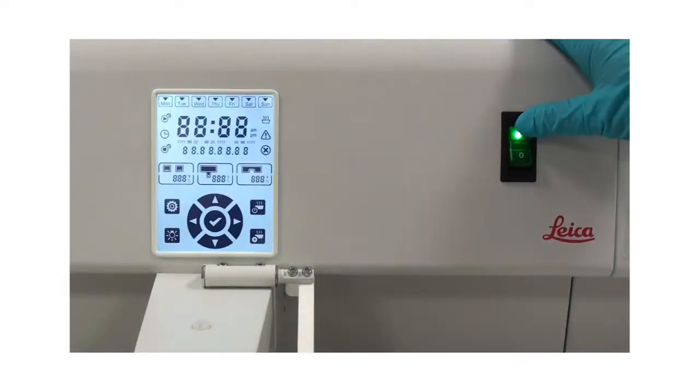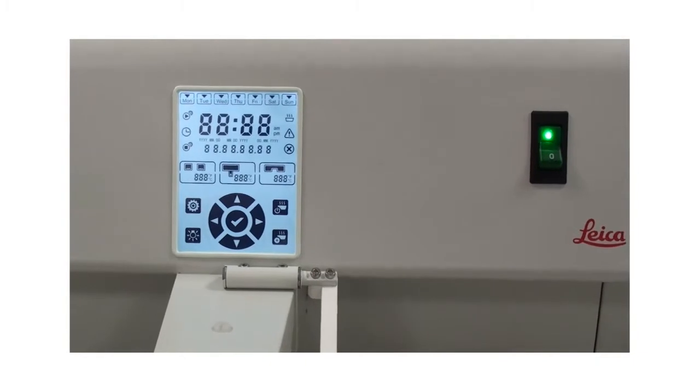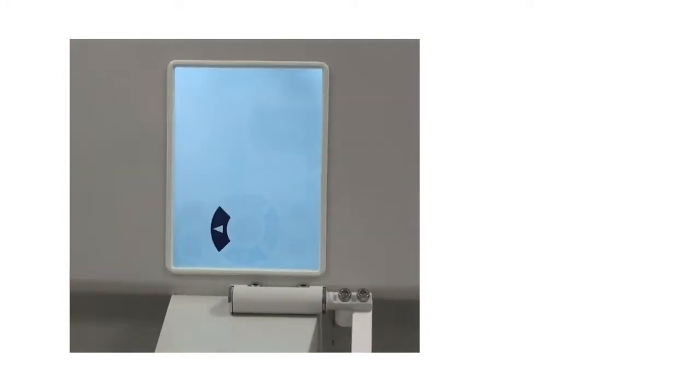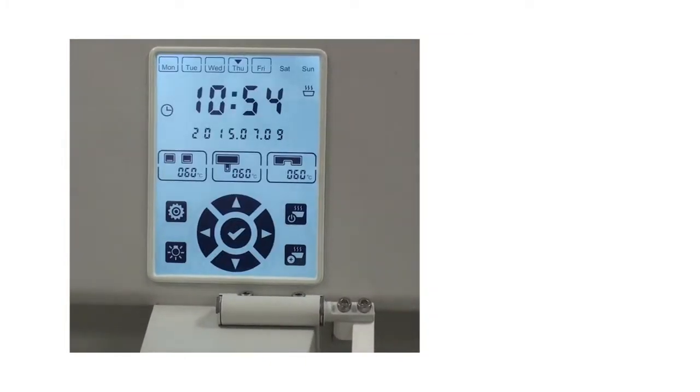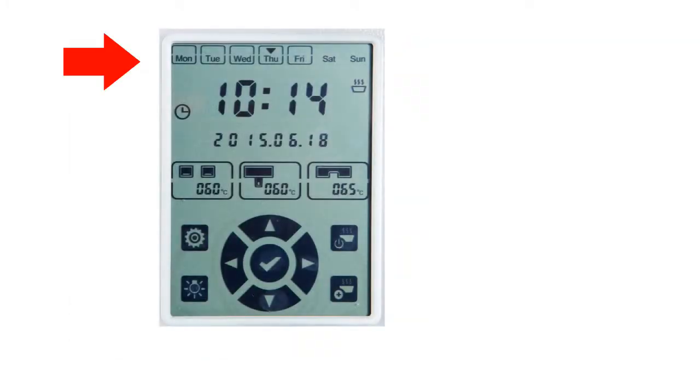Switch on the instrument and control the embedding system with a backlit touch screen. All relevant information is indicated here, such as working days, current time and defined start and end time, temperature of trays, paraffin tank and the working surface, a melting indicator, temperature, plus set up and light buttons.